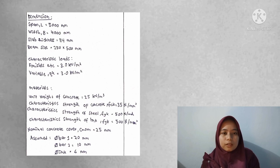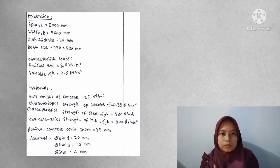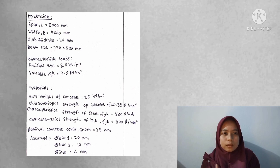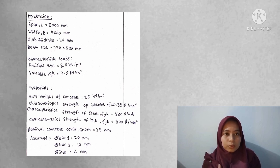For characteristic loads, finishes and QK is 3.0 kN/m². For materials, unit weight of concrete is 23 kN/m³. FCK is 35 kN/m², while FYK is 500 N/mm². Cover is 25 mm.